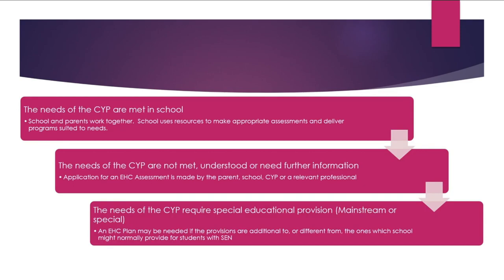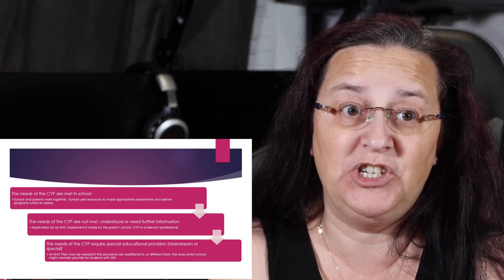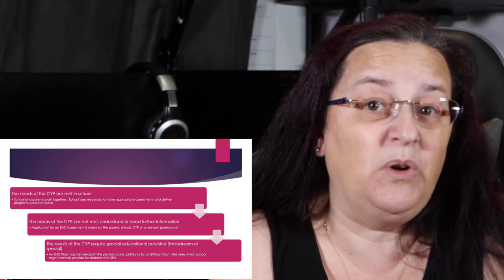We have three levels. The first: the needs of the child are met within school — the school and parents are working together, the school is using its resources to make reasonable adjustments and deliver programs that suit the child's needs. The second: the needs of the child are not being met or not understood, or we need further information — this is where we might consider putting in an EHC assessment application. The third: we desperately need specialist educational provision, whether in mainstream or a special school, and at that point we definitely need an EHC plan.